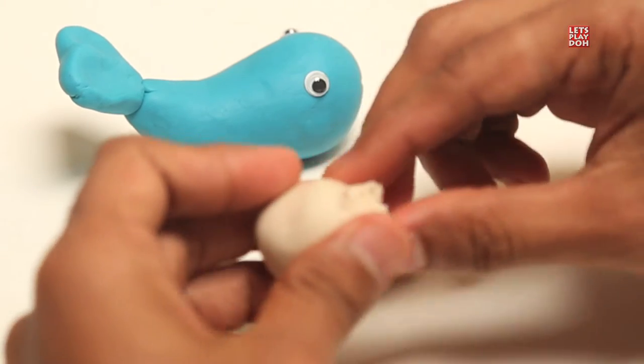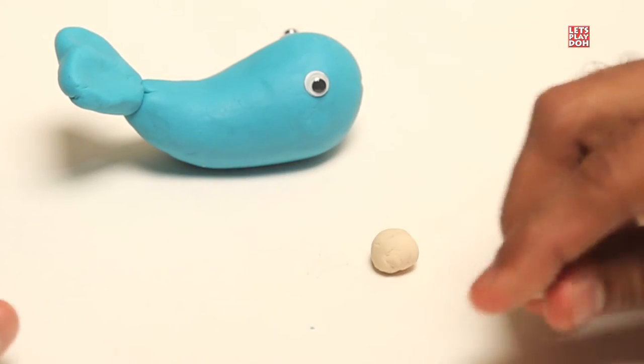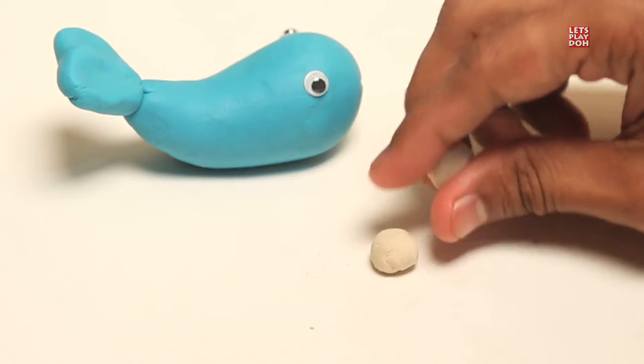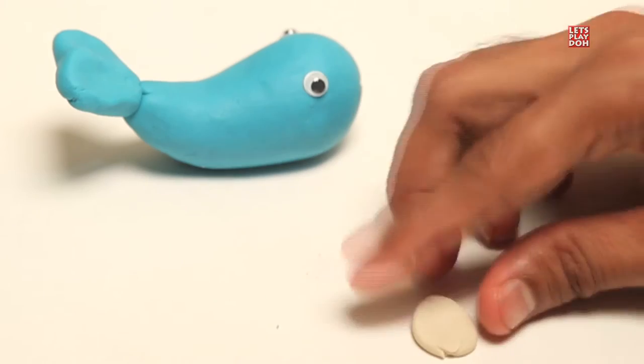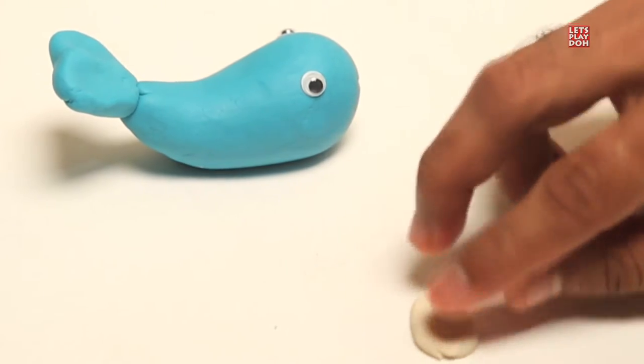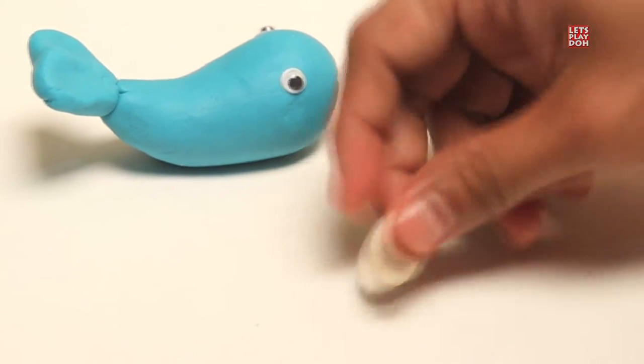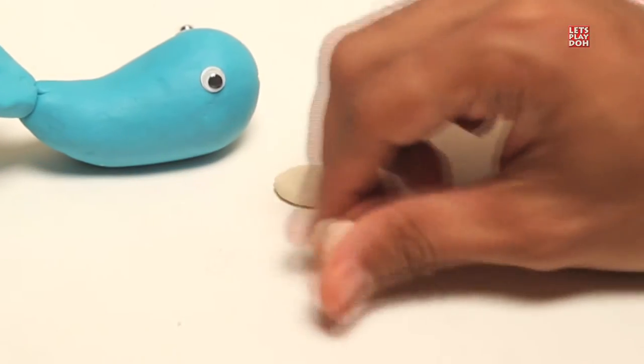So let's take some white Play-Doh, and you don't need much, but let's just take a little piece off, and a second piece, and they should be the same size.